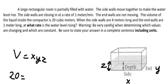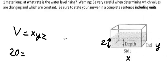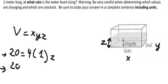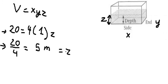The size x is given as 4, and we can now find the depth of the water z. We divide both sides by 4 and get z equals 5 meters. We will also use this equation going forward.